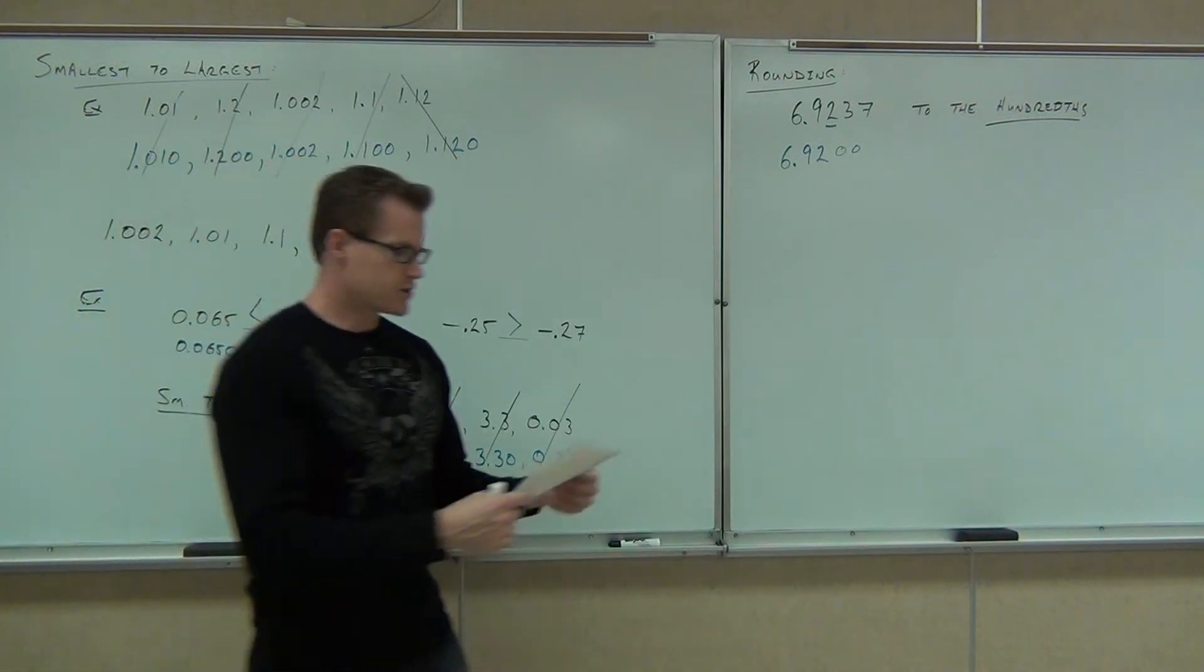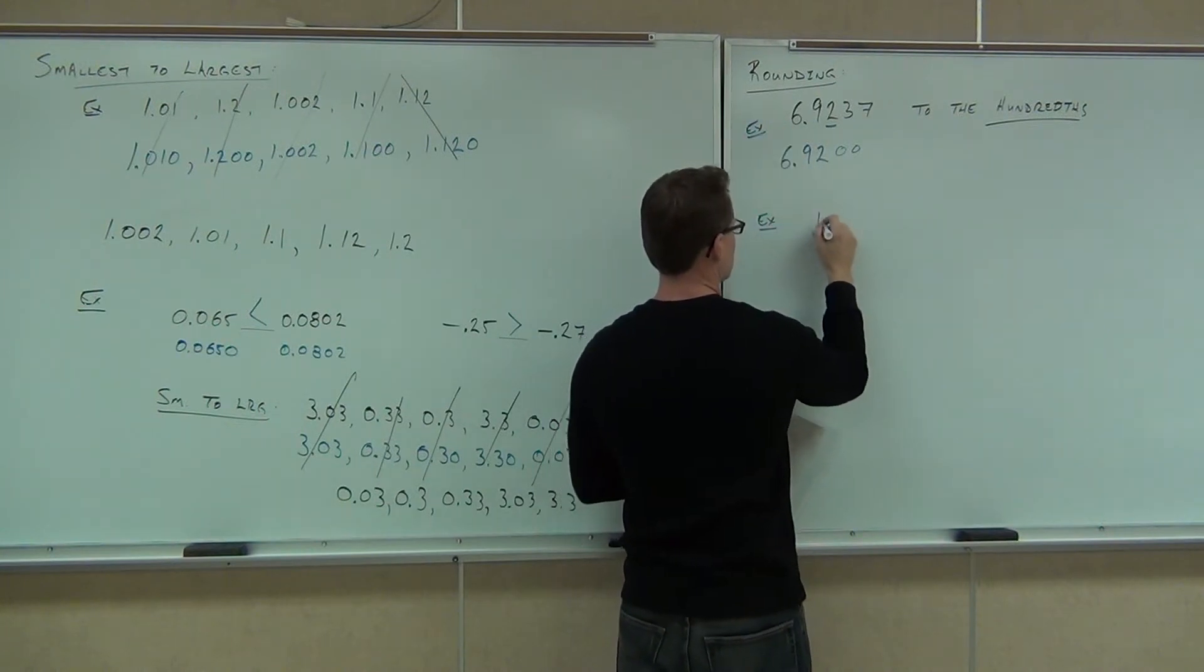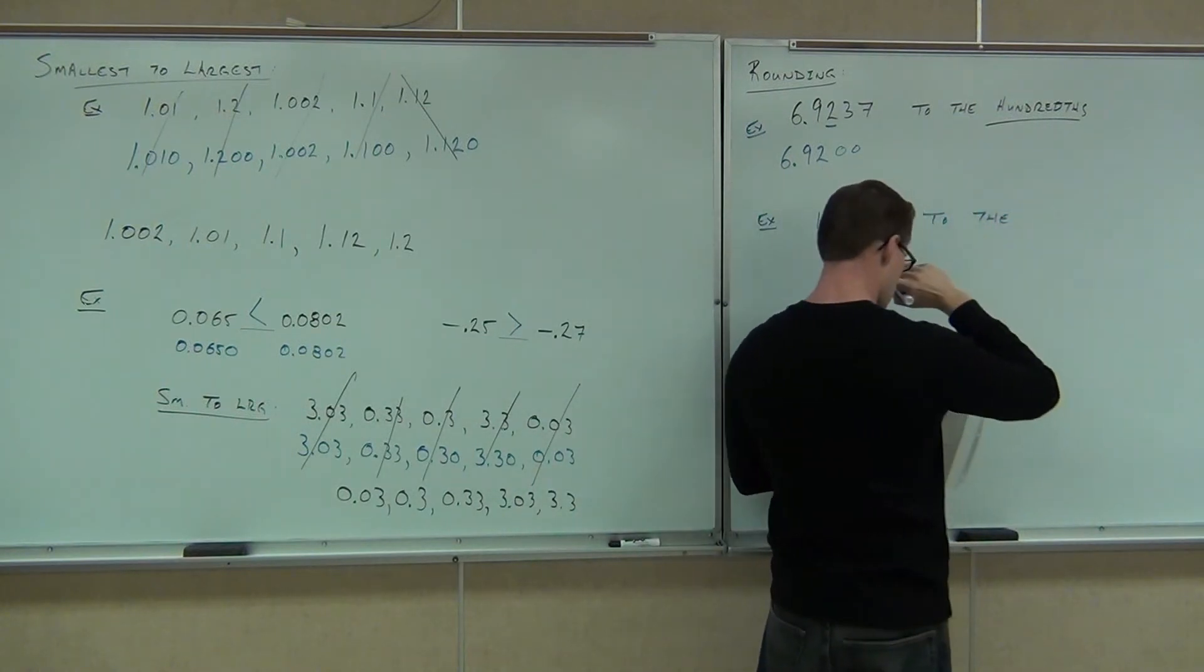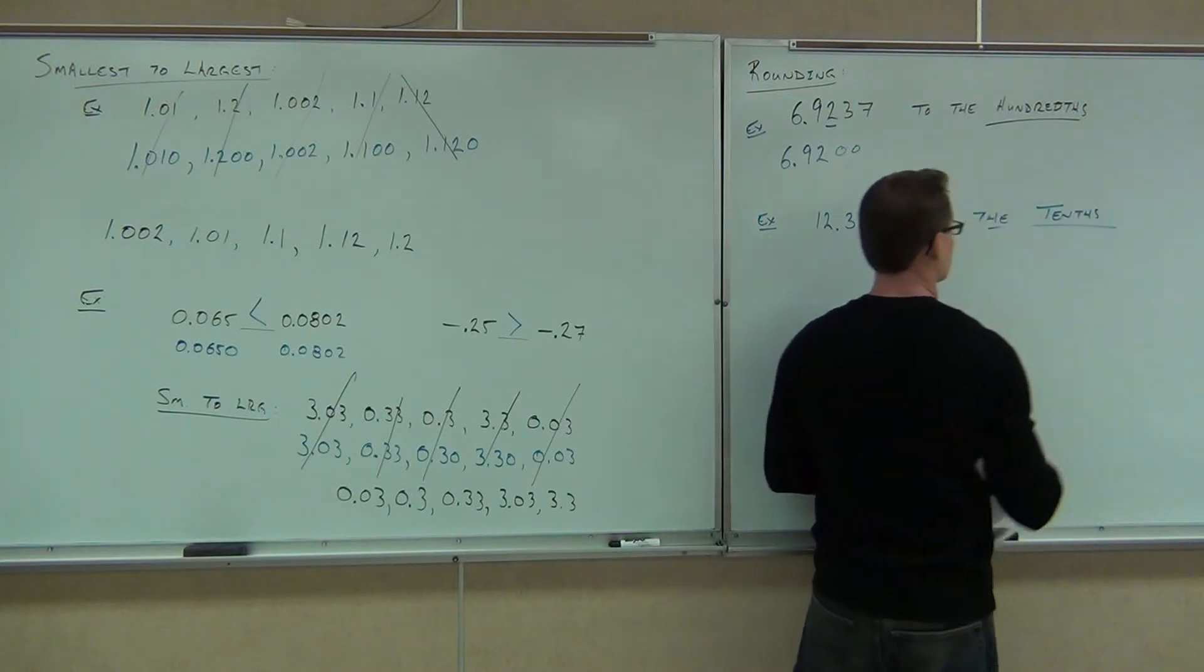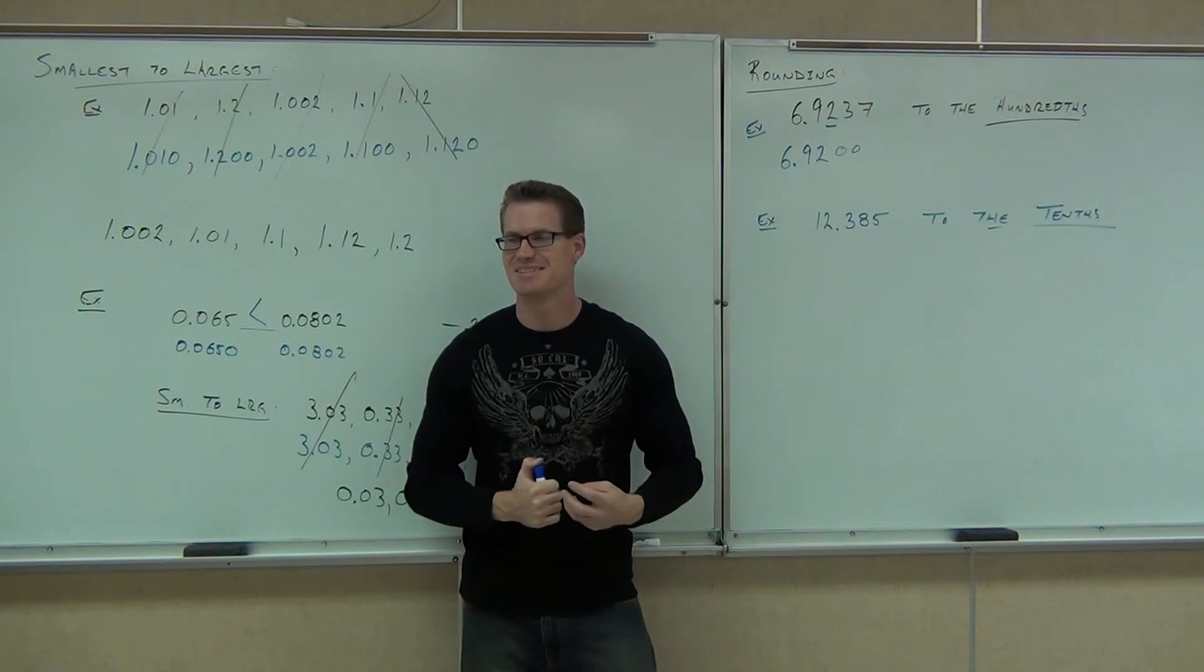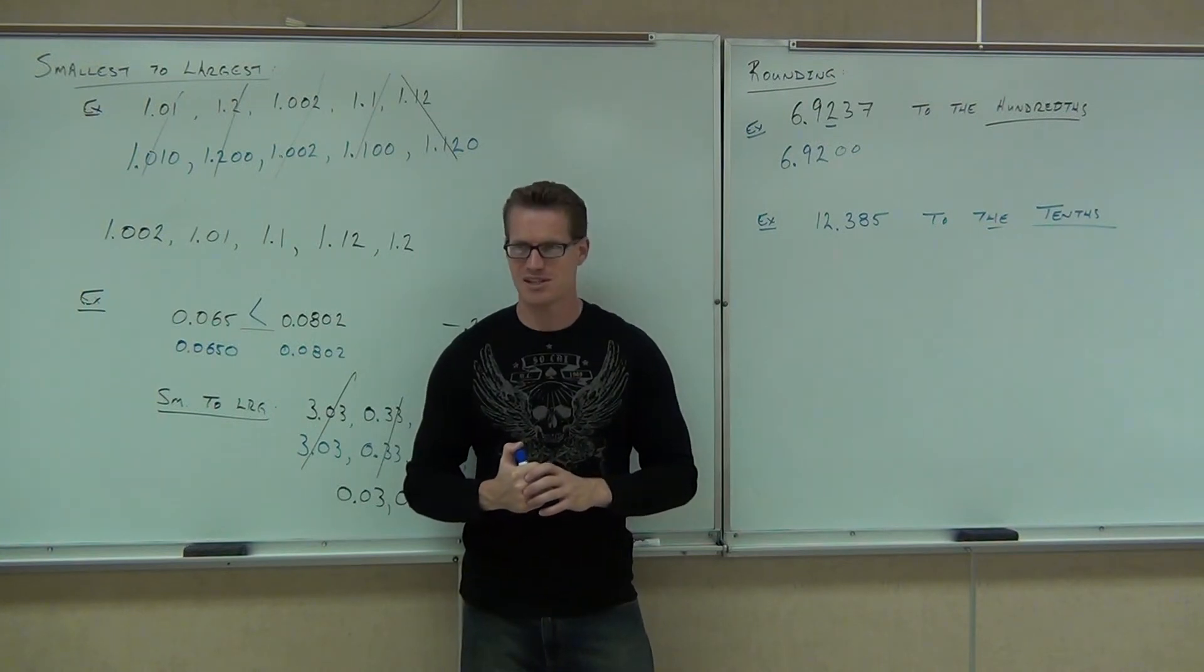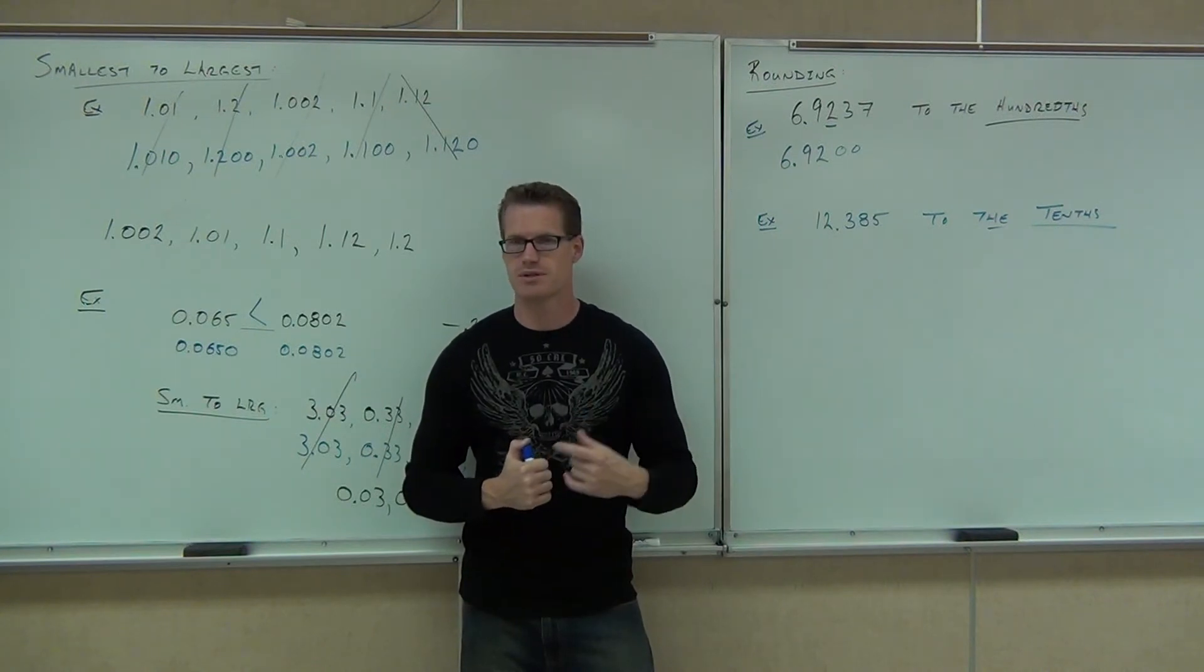Let's do 12.385 to the tenths. Again, let's practice. What digit is in the tens? One. One is in the tens. What's in the tenths? Three. Three is in the tenths. You've got to be careful on the ths and the s. The tens is a one. The tenths signifies after the decimal place, that's the three.